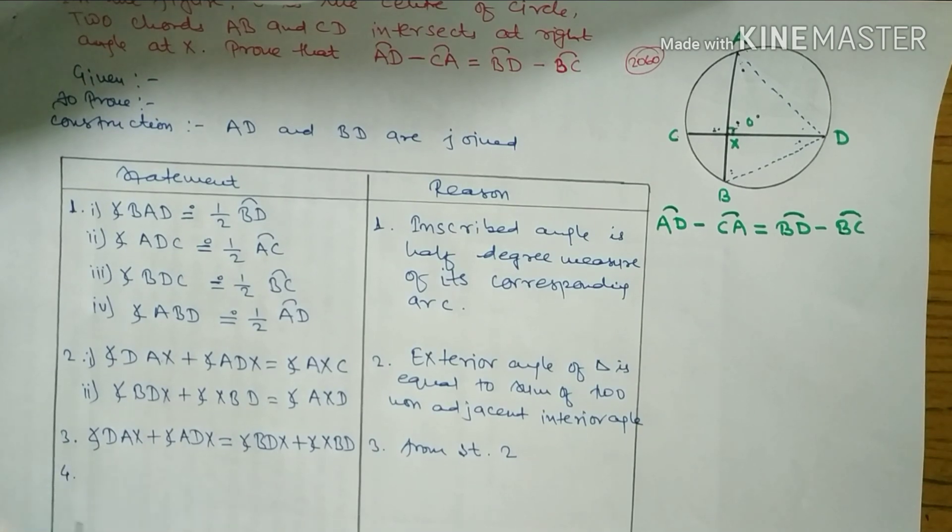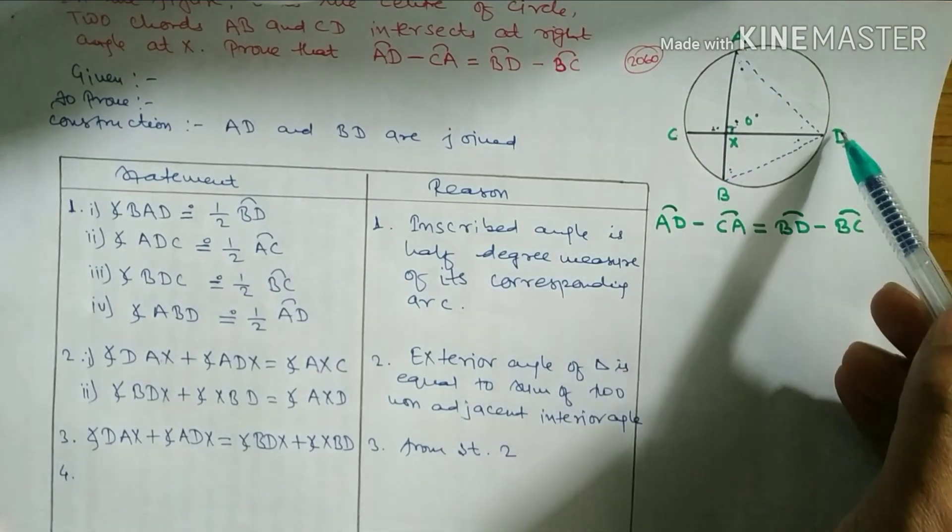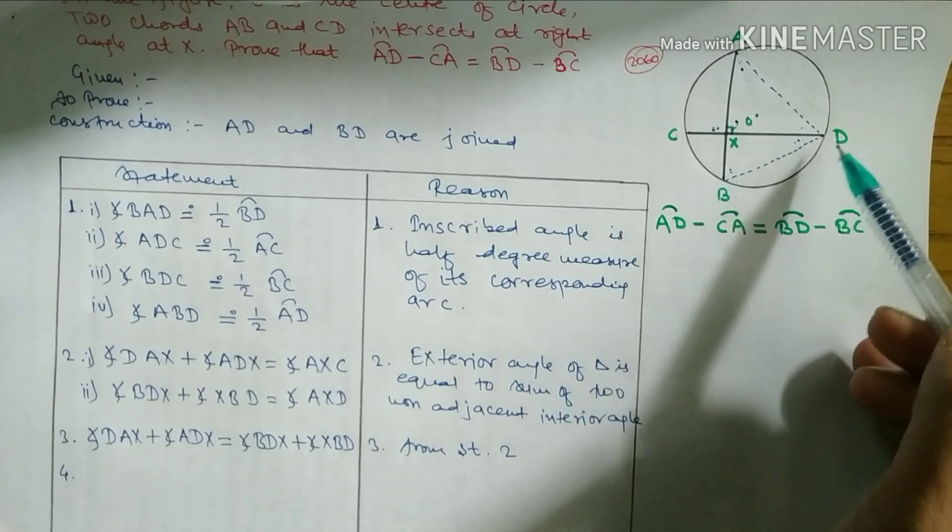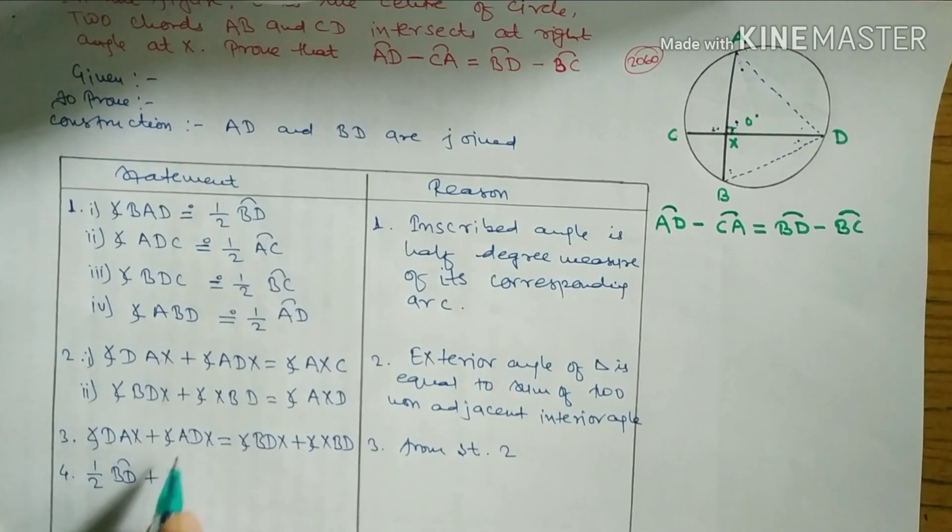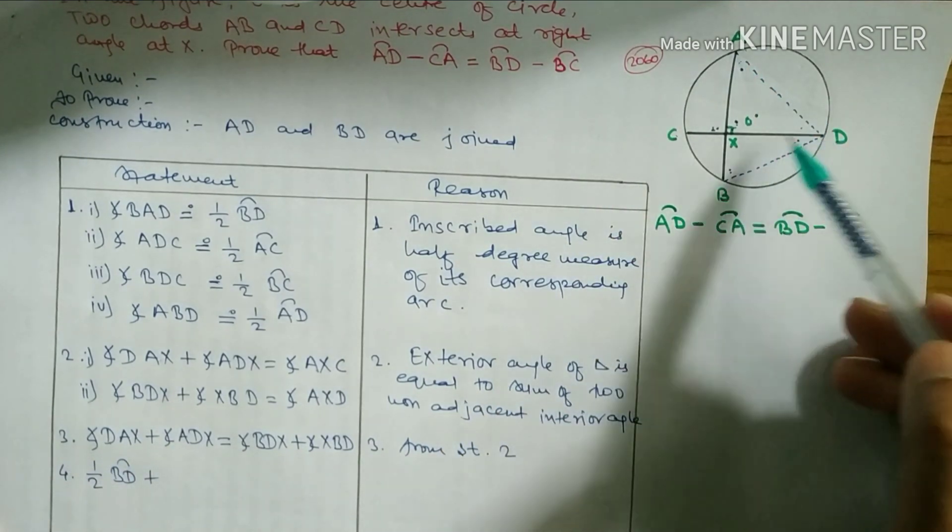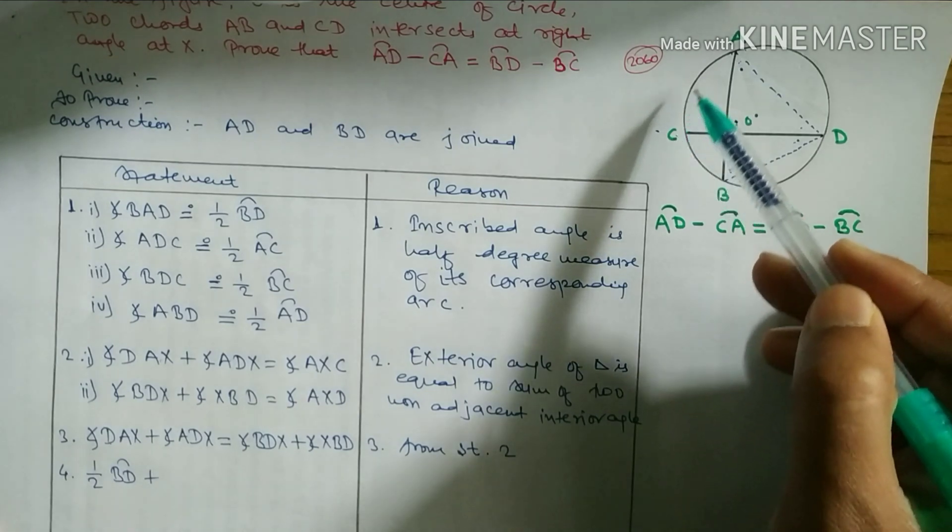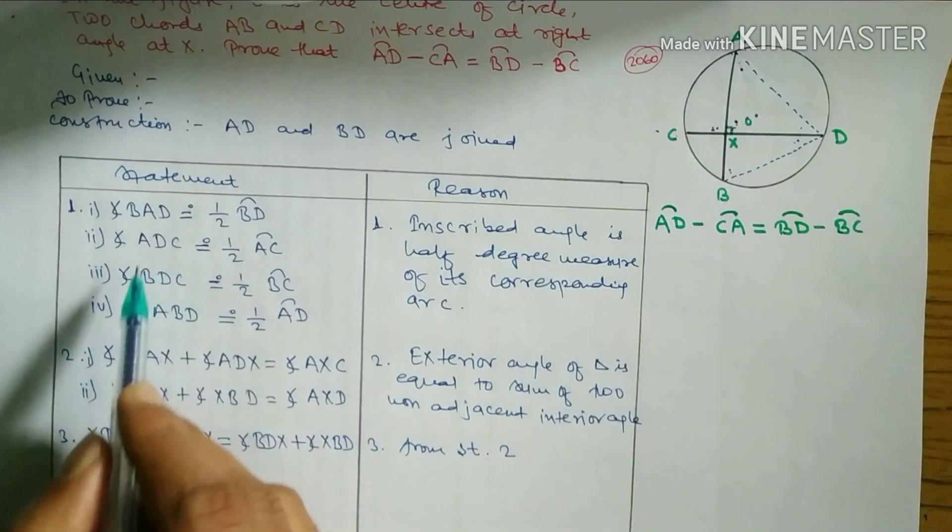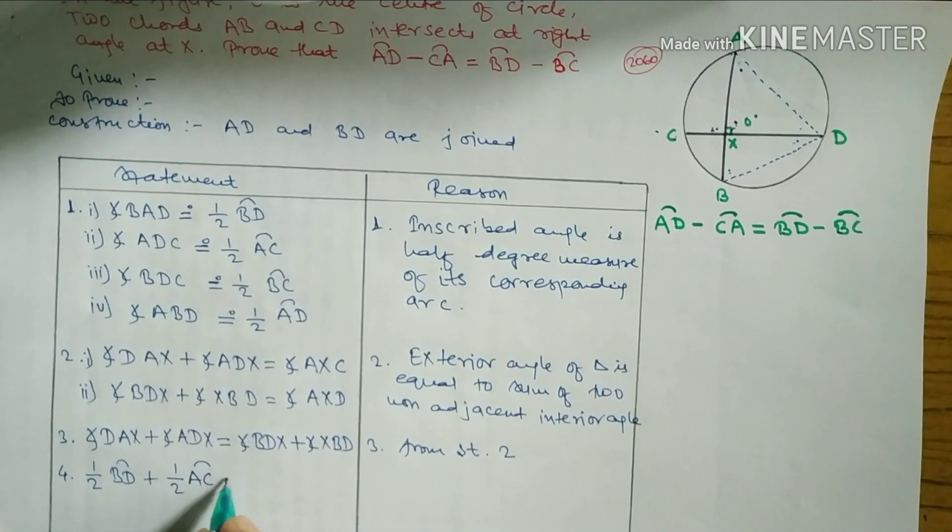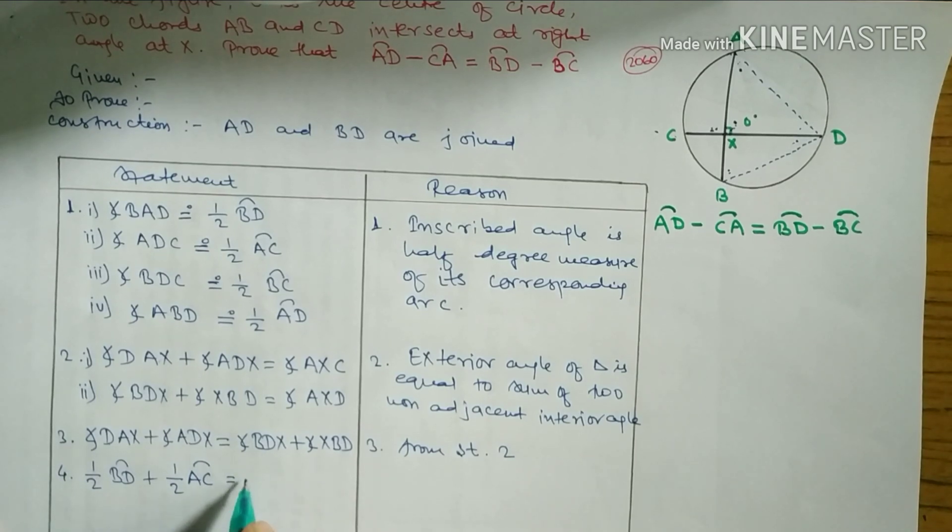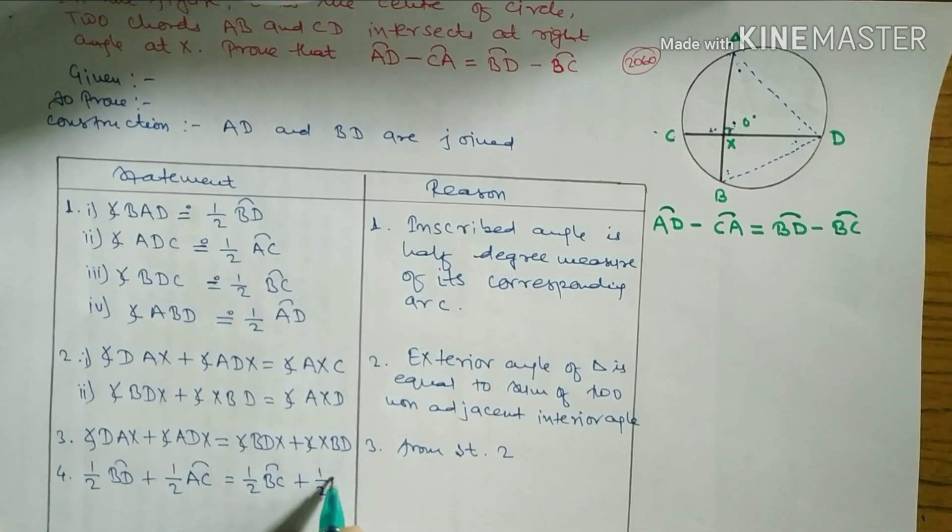Now we have to write in the form of arcs. DAX is half of BD. ADX is half of AC. Similarly, BDX is equal to half of BC, and angle ABD inscribed angle is equal to half of AD.